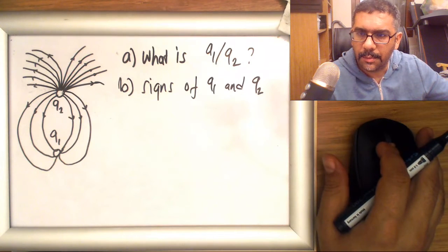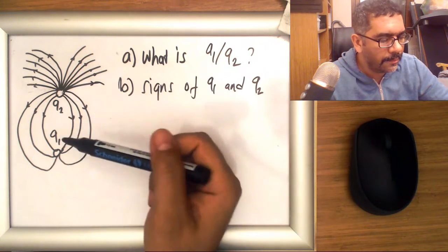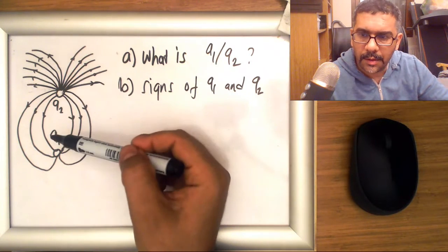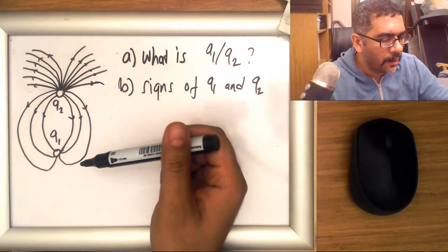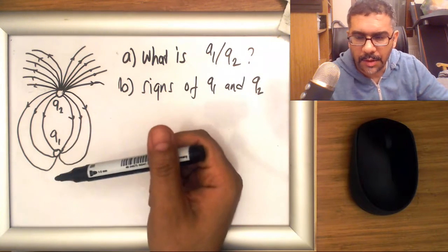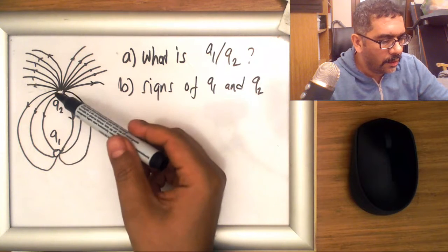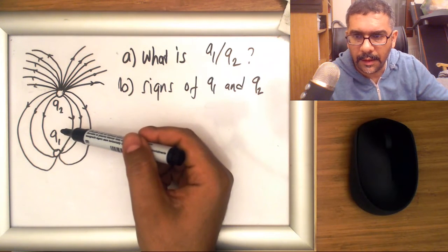Okay, so we have an example concerning electric field lines. What you see in the picture are two charges, q1 and q2. Initially, these are unknowns—what the charges are and the signs are—but the picture shows the electric field lines around these two charges.